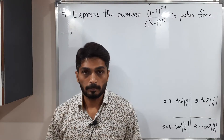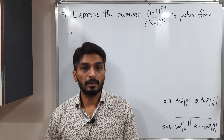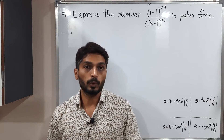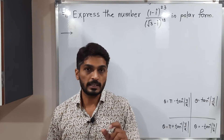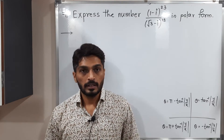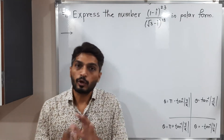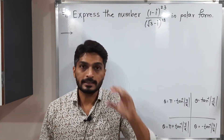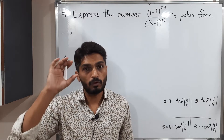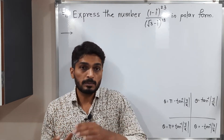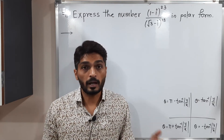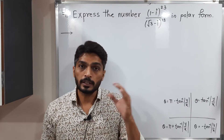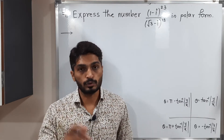Let us discuss this example. We have one complex number and we have to express it in polar form, that means in terms of R and theta. It is looking difficult but it is not that difficult. It has a numerator and a denominator. First we will think for the numerator only — express it in exponential form — and after that for the denominator also we will convert it into exponential form.